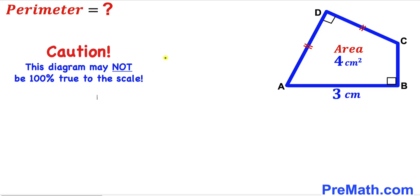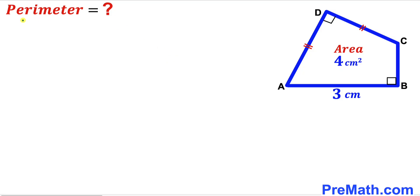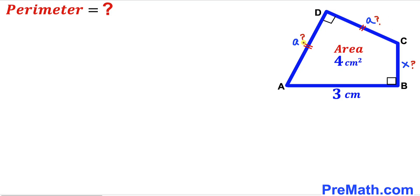Please keep in mind that this figure may not be 100% true to scale. Let's get started. In our first step, since we are going to calculate the perimeter of this quadrilateral, the perimeter is simply the sum of all four side lengths. The only known side length is AB, so we need to find the other three sides. I am going to label AD and CD as lowercase 'a', and BC as lowercase 'x'.